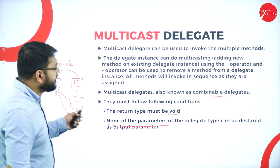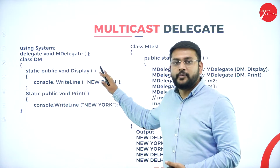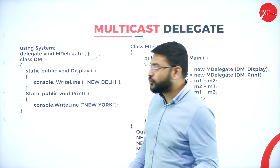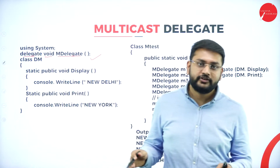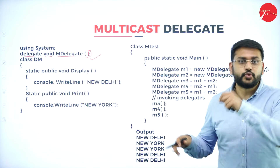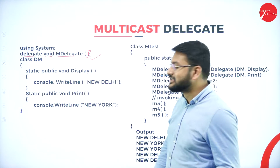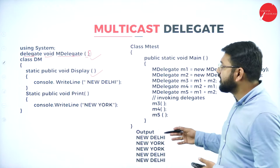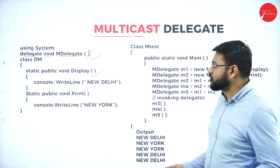Let's take an example of a multicast delegate and understand with this program. We are declaring a delegate with the keyword delegate, return type is void, and the name of the delegate is mdelegate, followed by a semicolon. The name of the class is DM, and we have a static public void method called display, which simply prints New Delhi.